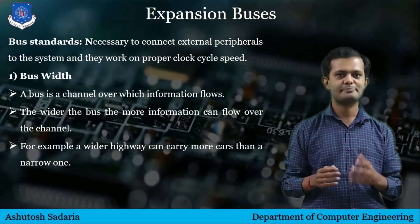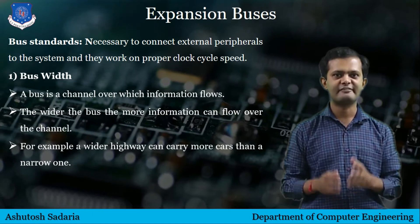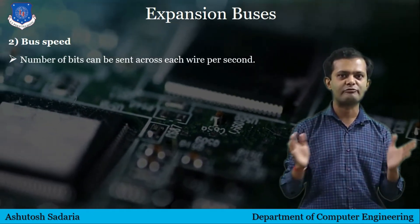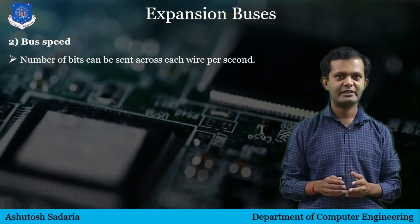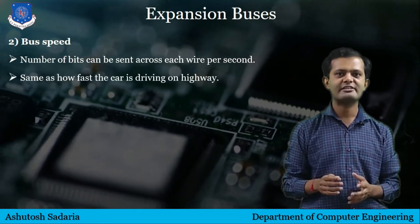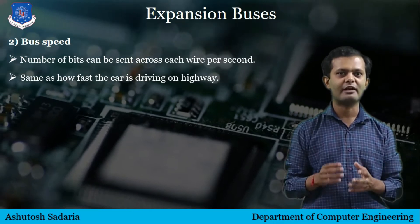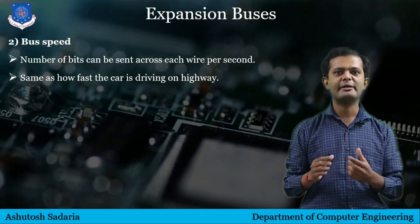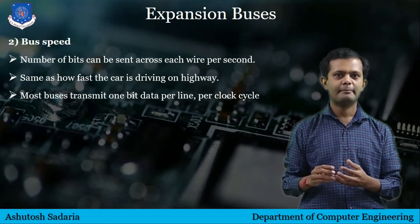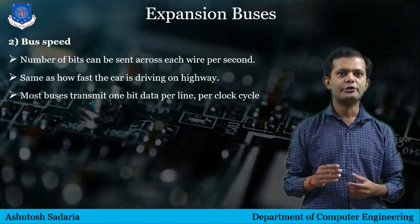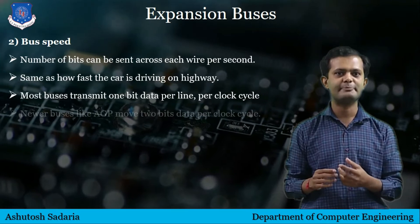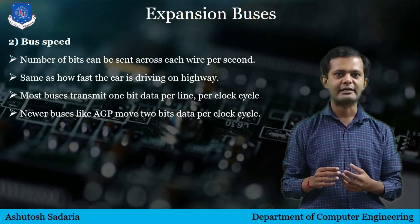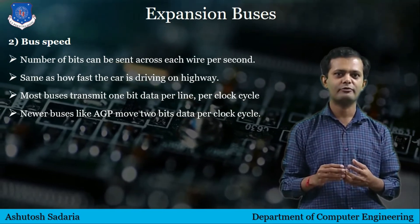The second standard is bus speed. The speed of the bus reflects how many bits of information can be sent across each wire per second. This is analogous to how fast the cars are driving on our highway analogy. Most buses transmit one bit of data per line per clock cycle, although newer high-performance buses like AGP may actually move two bits of data per clock cycle, doubling the performance of the bus.